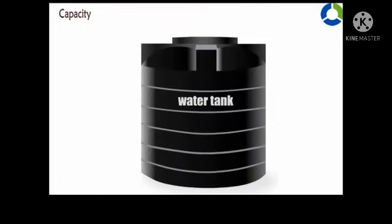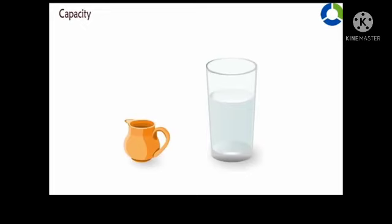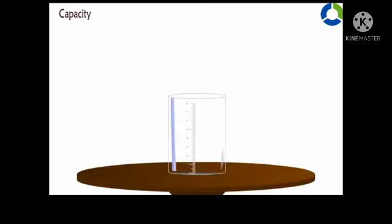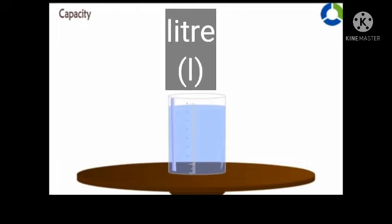The size of cups and glasses differ from one another. So we need a standard unit of measuring liquid. So we can use measuring cylinders to measure capacity. We can measure capacity in liters and milliliters.